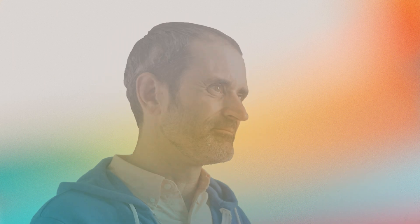Sometimes you'll want to search across multiple retrievers. That's where ensemble retrievers come in. An ensemble retriever executes multiple individual retrievers, merges the results into a unified list, ranks results by relevance, and returns the most contextually appropriate content.